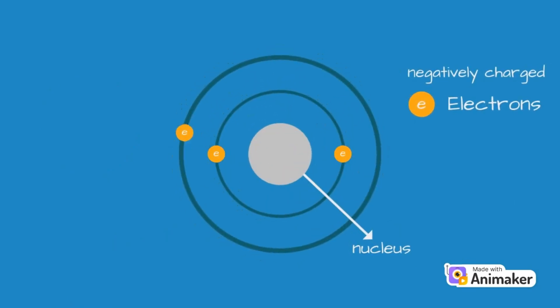As we have learnt in our previous video, atoms consist of a central nucleus surrounded by negatively charged electrons. The electrons orbit around the nucleus in definite shells. The nucleus is made up of two different types of particles, the positively charged protons and the neutral neutrons.